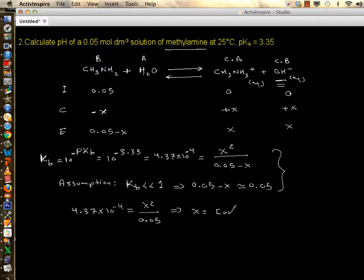Now let's solve for x, which is concentration of hydroxide. It's the square root of these two quantities: 0.05 multiplied by 4.37 times 10 to minus 4. Many of you students make mistakes by forgetting about the square root. So concentration of hydroxide becomes 0.00467 mole per decimeter cube.